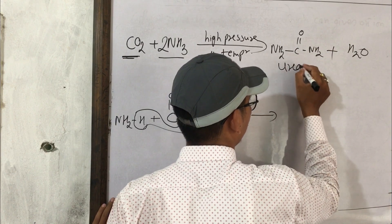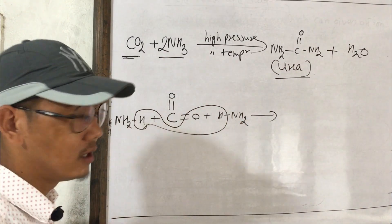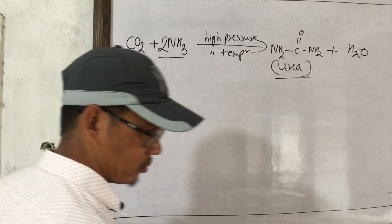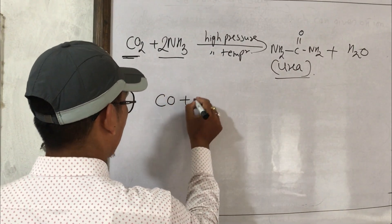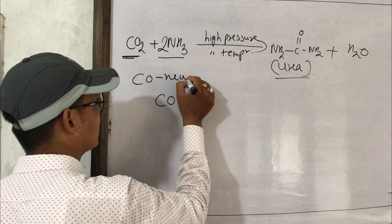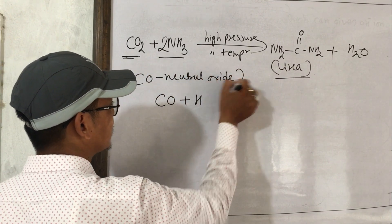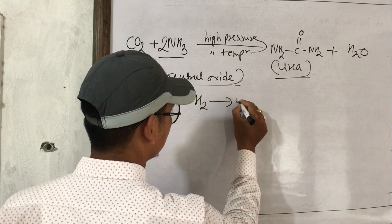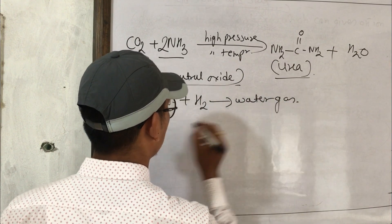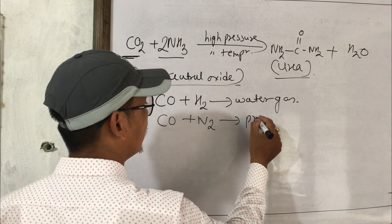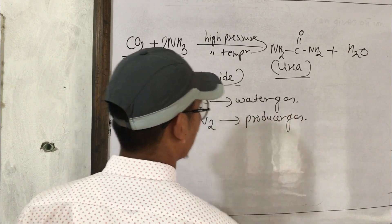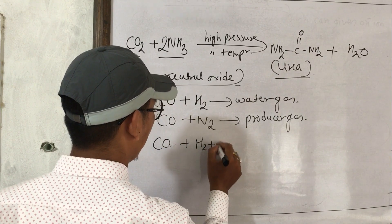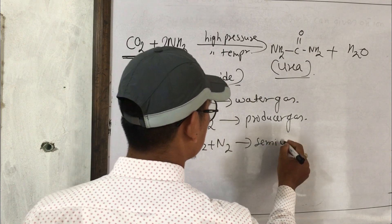The reaction of CO₂ with ammonia produces urea. Carbon monoxide is a neutral oxide. A mixture of carbon monoxide and hydrogen is called water gas. A mixture of carbon monoxide and nitrogen is called producer gas. A mixture of carbon monoxide, hydrogen, and nitrogen is called semi-water gas.